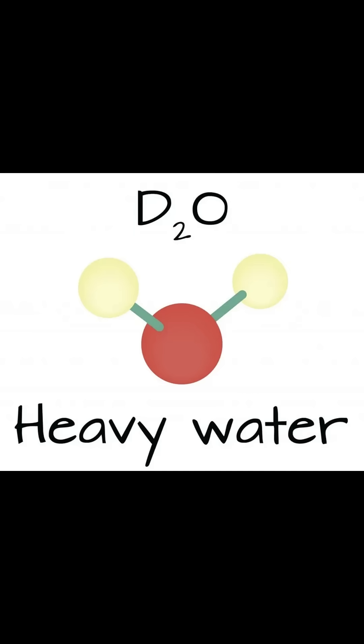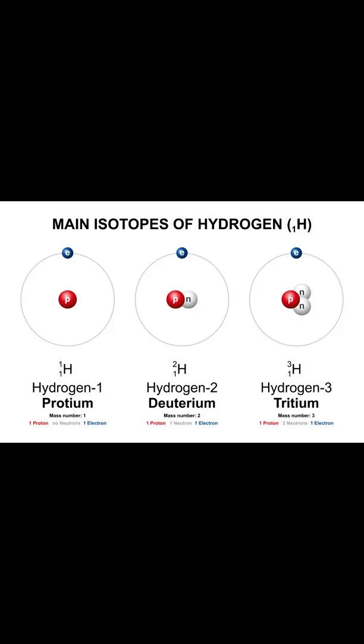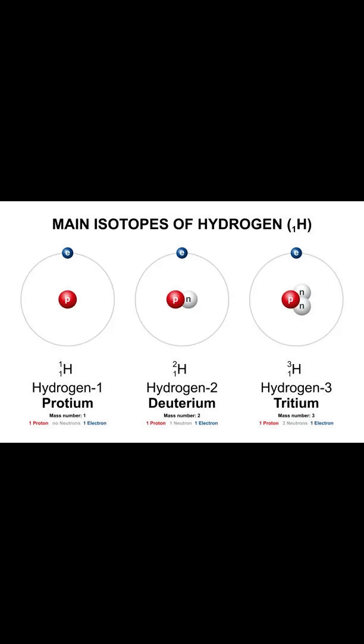The reason it's called heavy water is because it's DTO instead of HTO. D means deuterium, which is the heavier isotope of hydrogen. Isotopes are a type of atom that have the same number of protons but different numbers of neutrons.